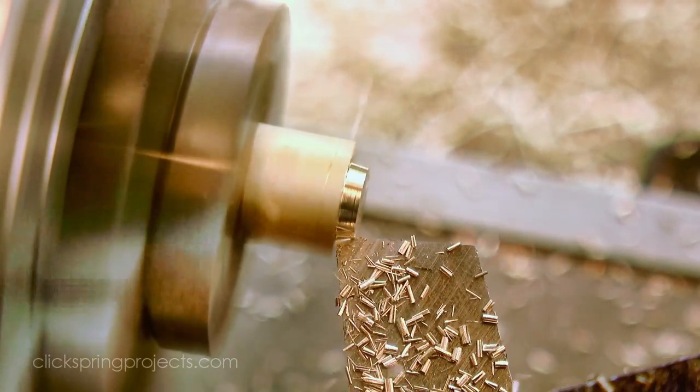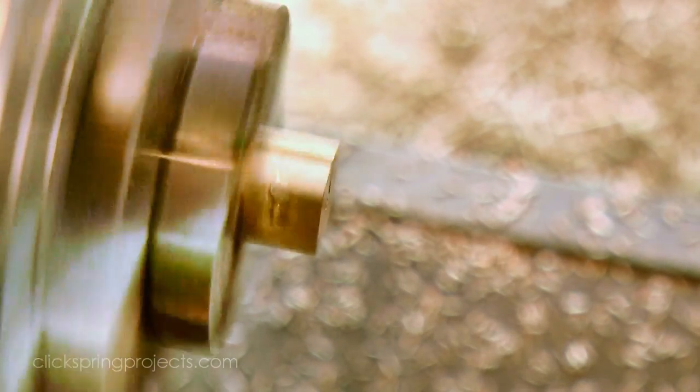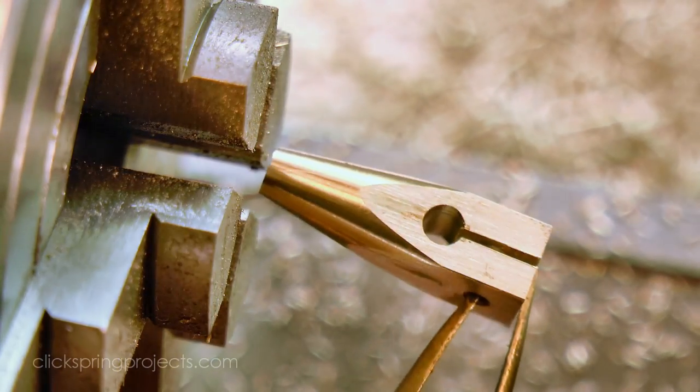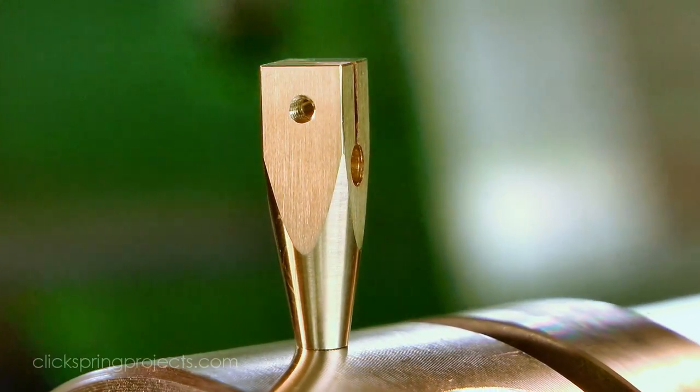Back on the lathe, a facing cut reduces the part to size and leaves a clean cut on that upper surface. A light touch with an oilstone takes care of the sharp corners to complete the part.